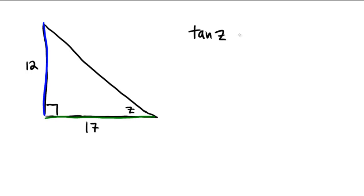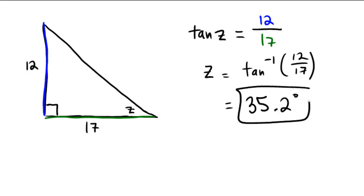Tangent of z is equal to the opposite, which is 12, over the adjacent, which is 17. Therefore, z would be equal to the arctangent, the inverse tangent, of 12 over 17. So now we are just going to grab the calculator, hopefully type this correctly. Tan inverse of 12 over 17, looks like it is giving us 35.21, so I will go 35.2 degrees.